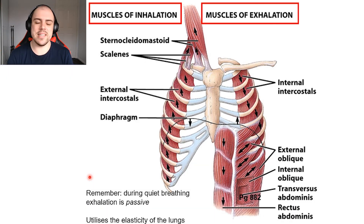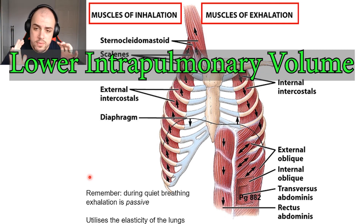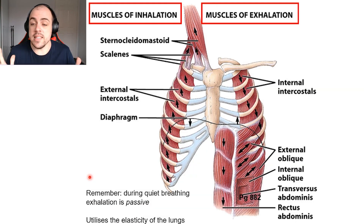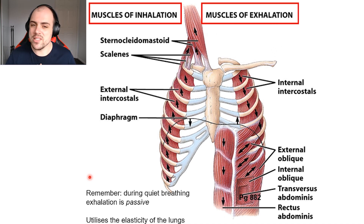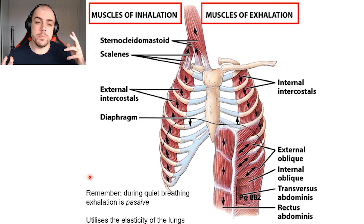For forced exhalation, we use our abdominal muscles to push up against the diaphragm, helping to empty the lungs, reduce volume, increase intrapulmonary pressure, and result in exhalation. We have accessory muscles such as the sternocleidomastoid, which connects directly to the sternum. When the sternocleidomastoid constricts, it helps pull the rib cage up, further expanding the lungs so we can get more air in. This is a really big difference between our passive and forced modes of breathing.